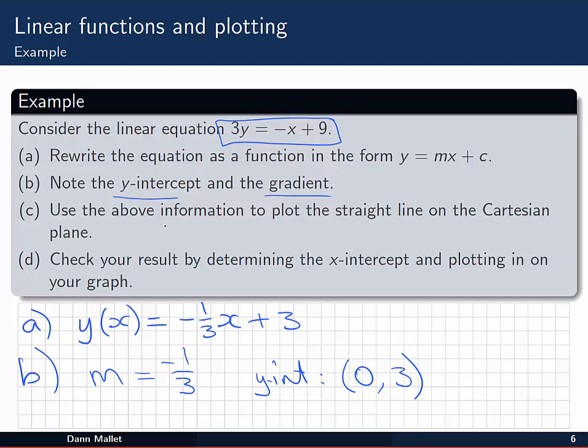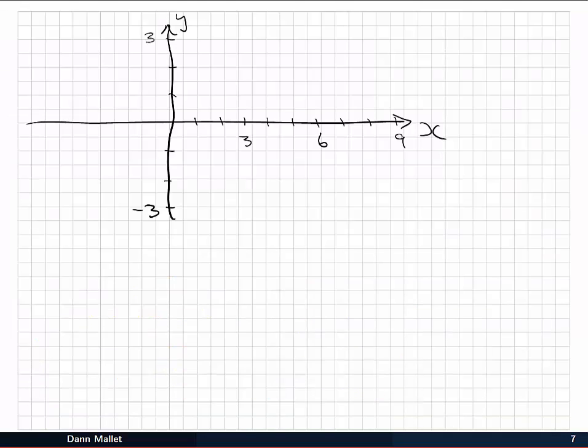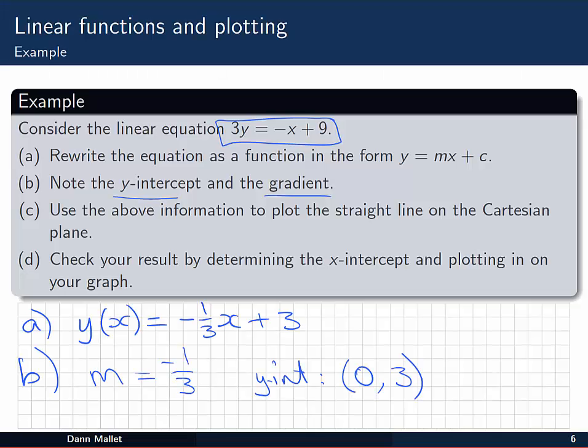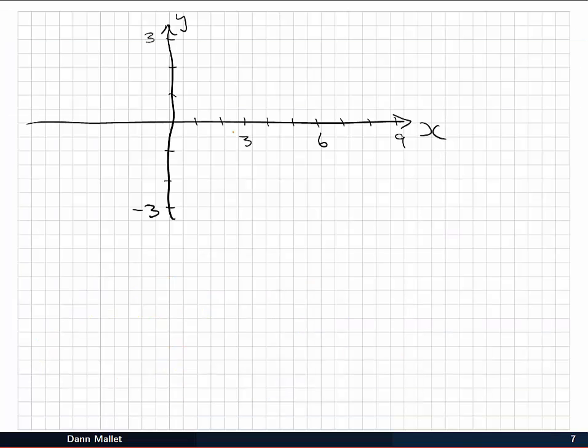So part c says to use that information, what we've just found, to plot the straight line on the Cartesian plane. So I've set up a Cartesian plane, a bit rough because I'm just sketching, on this next slide. Now we need to use the information. So the first thing I'm going to do is plot that point (0,3), the y intercept. So that's at x equals 0, and up here at y equal to 3. So that should be one point on our line there.